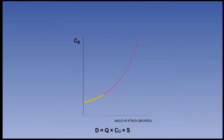At higher alphas, however, the CD increases exponentially. Beyond the stalling or critical angle of attack at CL maximum, there is a further large increase in CD.